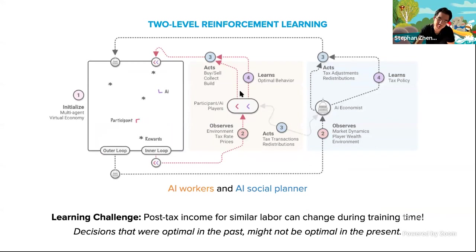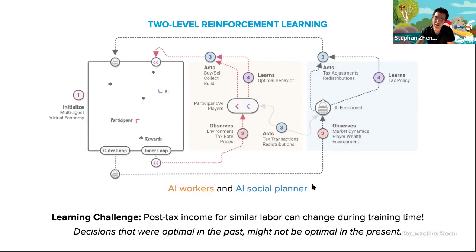Here's the two-level part. We use reinforcement learning at two different levels. At the inner loop, agents observe the state of the world and decide whether to move around, buy or sell resources, collect something, or build houses — taking tax rates as input and learning in this inner RL loop. At the same time, there's an outer loop where the planner constantly looks at the state of the world and adjusts the taxes being set. These taxes then influence the reward these agents see in the inner loop — that makes it two-level.